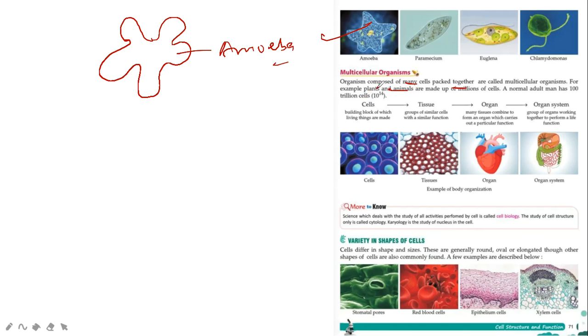For example, plants and animals are made up of millions of cells. A normal adult man has 100 trillion cells, 10 to the power 14. So organisms made from many cells we call multicellular and those made from single cells we call unicellular.